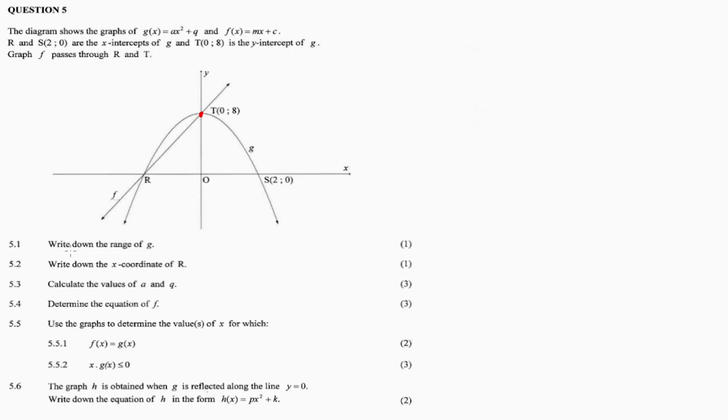T is the y-intercept for both graphs, and R is also the x-intercept for both graphs. So 5.1: write down the range of G. This is function G, which is the parabolic function. For the range, I'll draw a line to address an idea. The graph extends especially along the y-axis, because that's where we find the range.